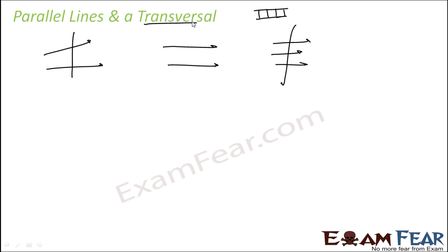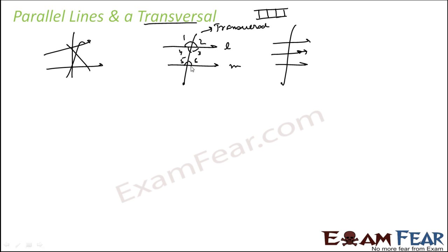For our purpose, we will talk about transversal for parallel lines. Let's understand the transversal for two parallel lines. If we have two parallel lines l and m and a transversal, we see eight angles formed: angle one, two, three, four, five, six, seven, and eight. Angles one, two, seven, and eight are exterior angles, and angles three, four, five, and six are interior angles.